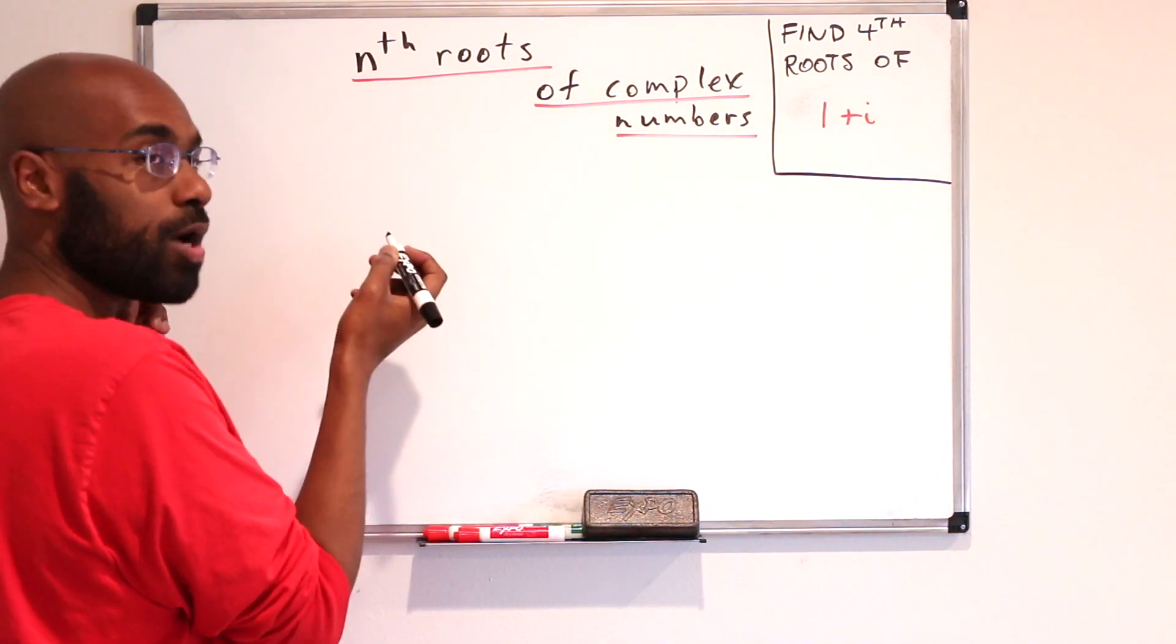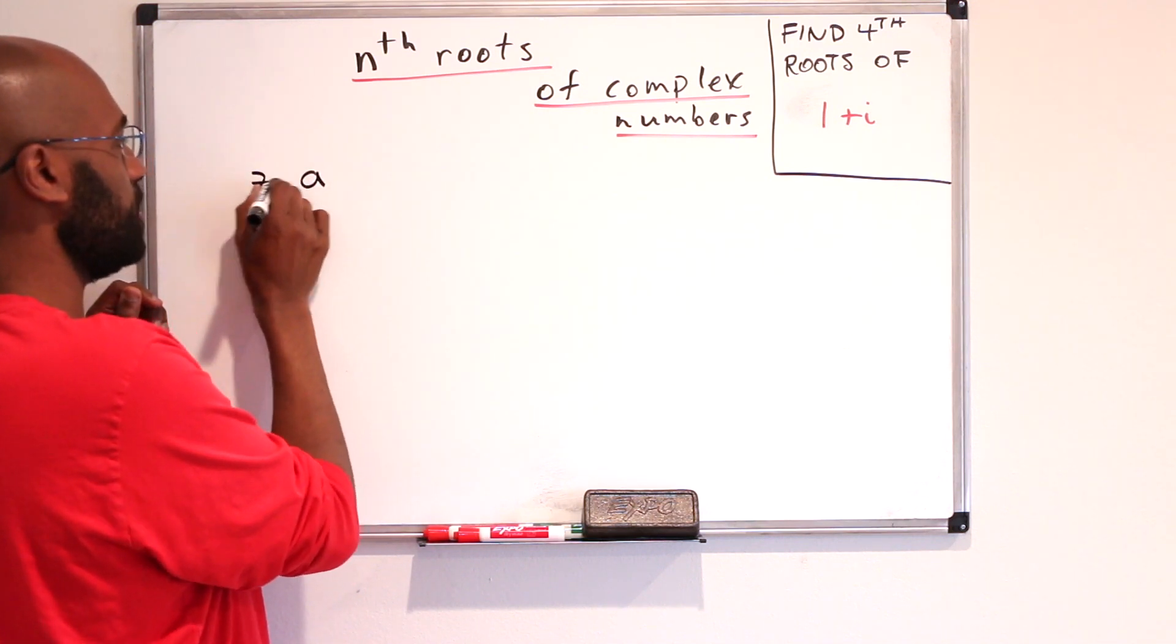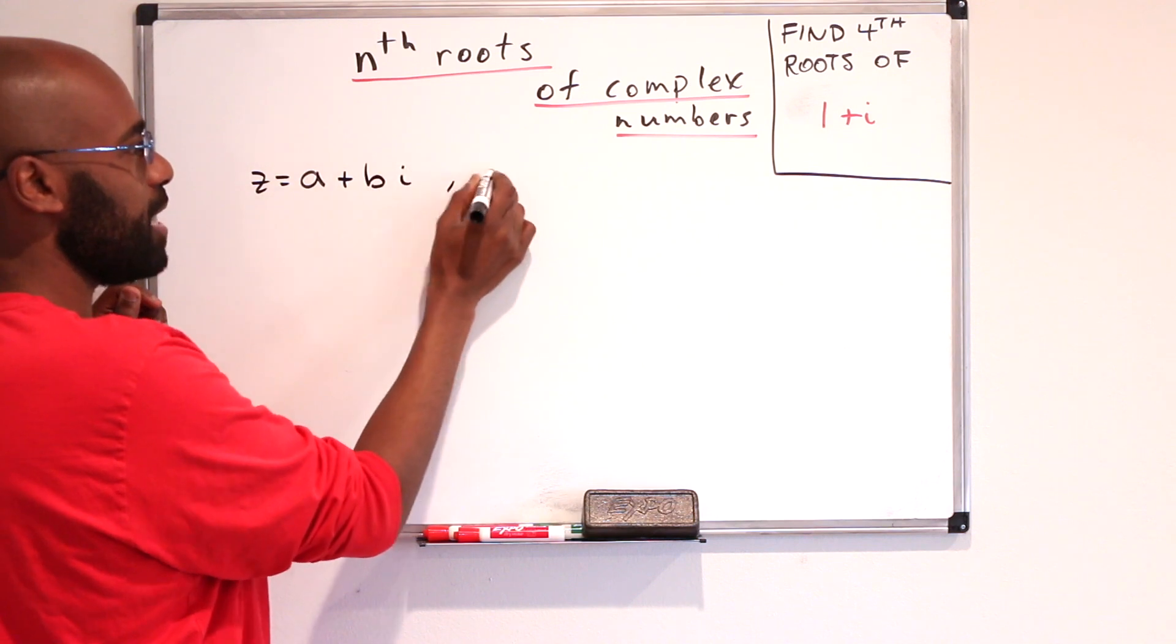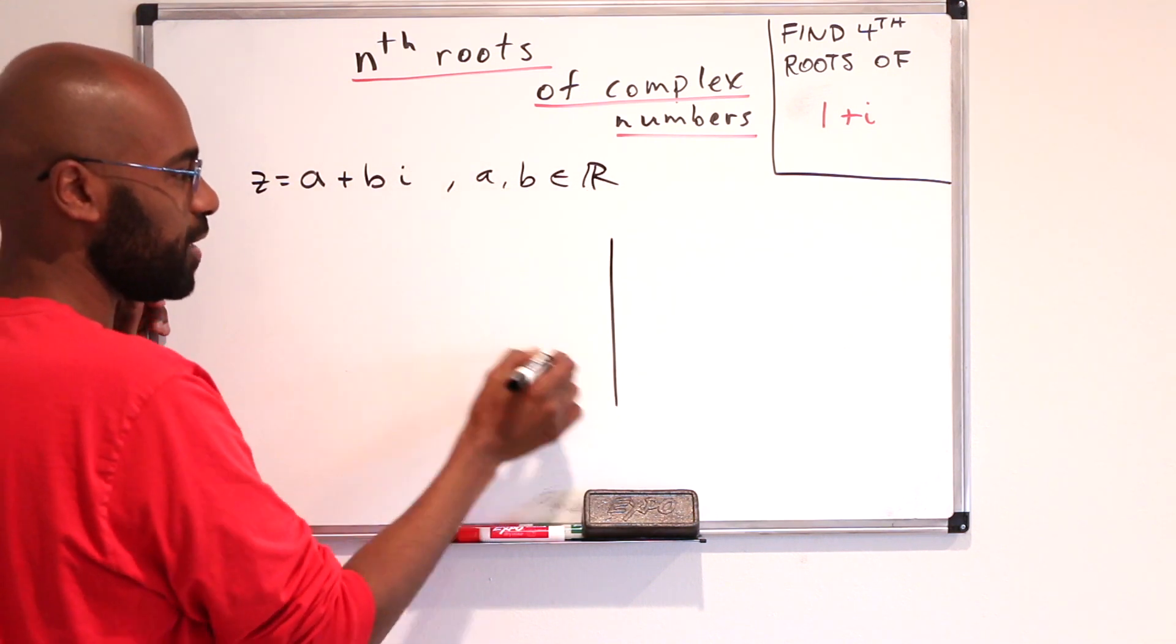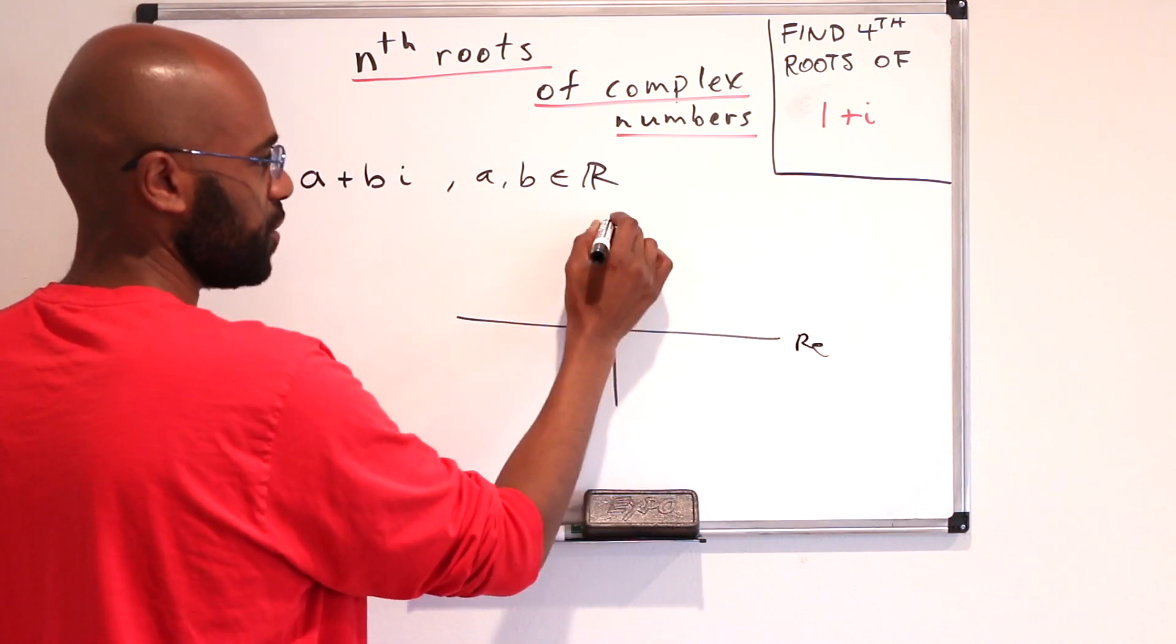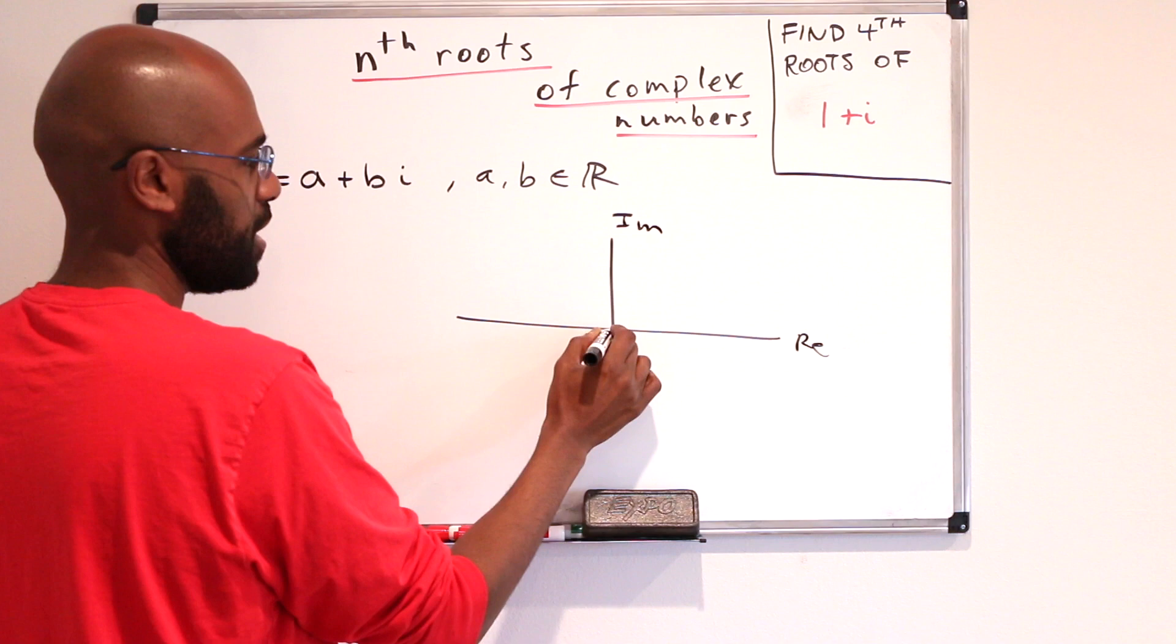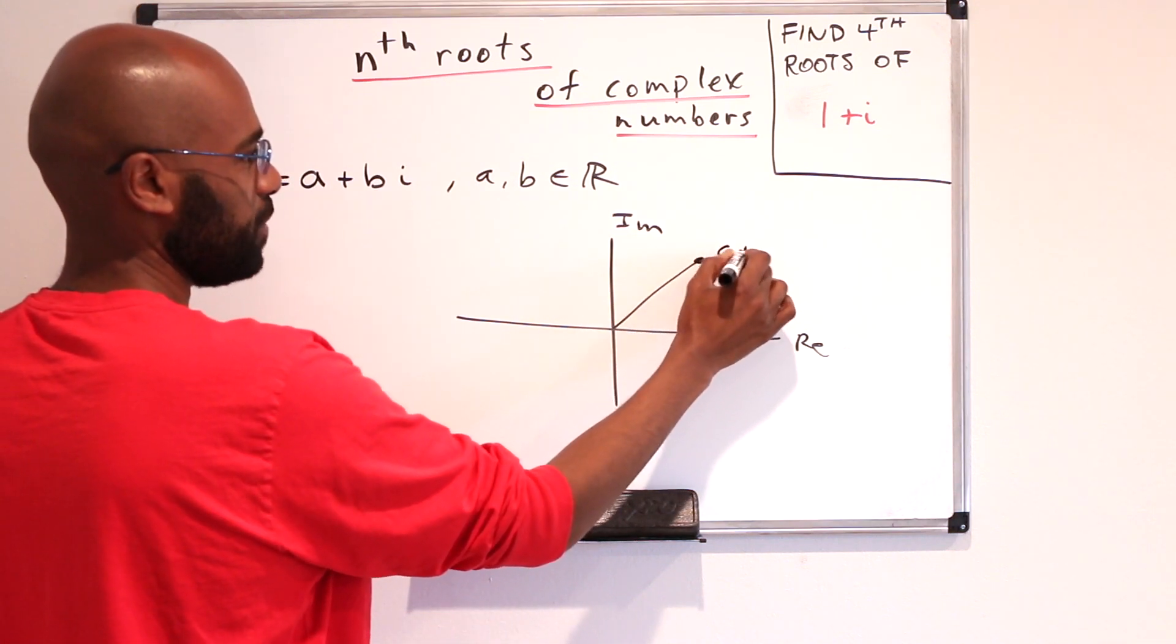Now to start, I want to talk about how complex numbers are usually represented. So usually you write a complex number z as a plus bi, where a and b are real numbers. And if we plotted this in the complex plane, it would look something like this. We'd have the real axis here, the imaginary axis here, and our number is somewhere over here, a plus bi.